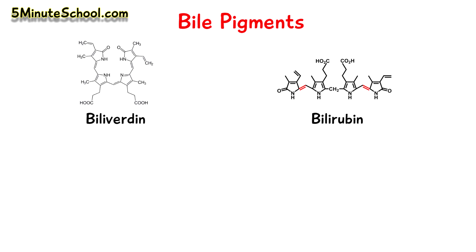Welcome to 5 Minute School. In this video we're going to be talking about how bile pigments are formed and how they are excreted. The two main bile pigments which circulate in the body are biliverdin and bilirubin. Bilirubin is the major bile pigment in humans.